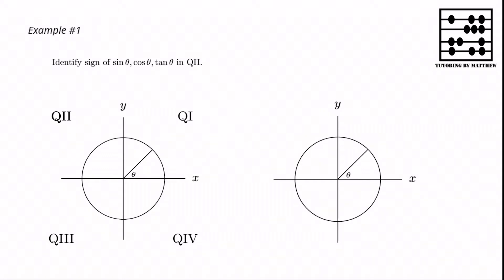We will look at how to determine the sign of the three basic trig functions using the acronym ASTC, which stands for all students take calculus. Here we have the unit circle and the four quadrants labeled starting from the positive x-axis.